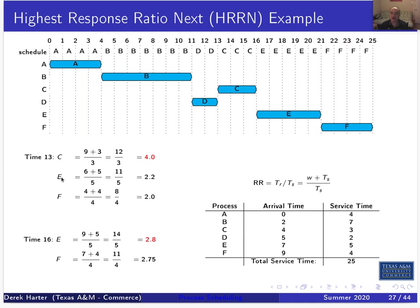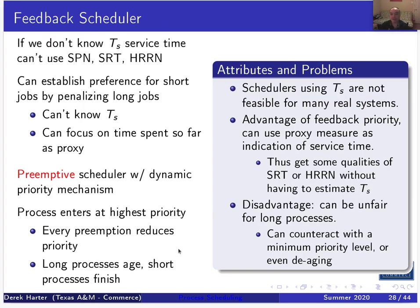At time thirteen when D finishes, we recalculate. C has been waiting nine steps, E for six, F for four — giving ratios that select C to run. At time sixteen when C finishes, E just slightly outranks F in response ratio, so E runs even though F was smaller and arrived later. Then F runs last.